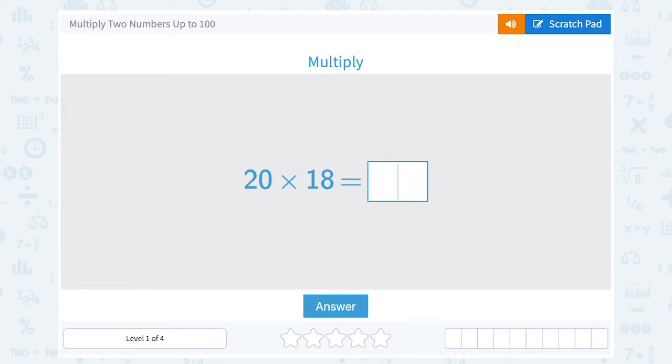Let's take a look at how to multiply two numbers up to 100. They ask us to multiply 20 times 18.